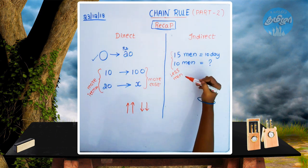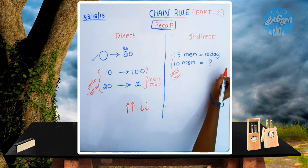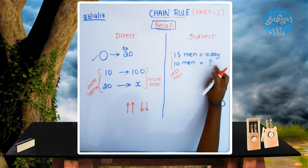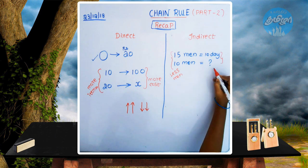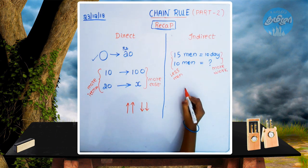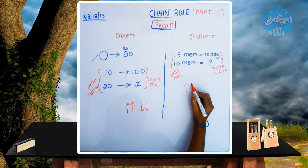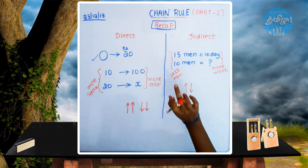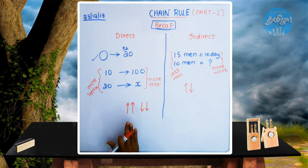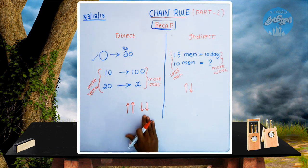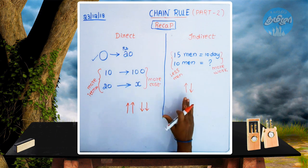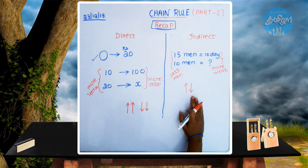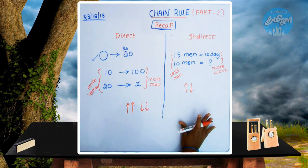If there are less men and you look at the same work, you notice that one value is higher or lower. Then we can say that we go direct, and then we will write indirect. So we can show that we write indirect as well.